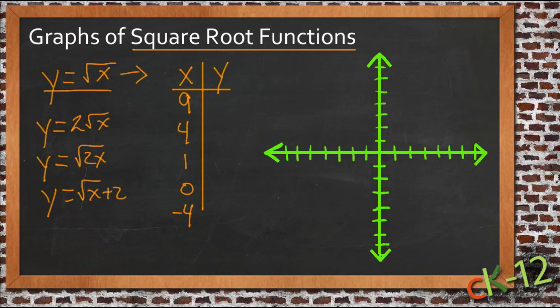So then when we put these numbers in, our output values are just going to be the square root of each of these numbers. So if x is 9, y is the square root of 9, which of course is 3.